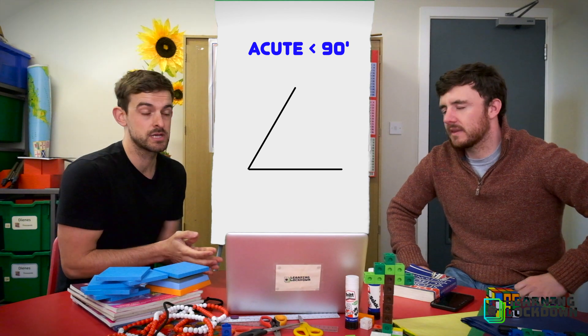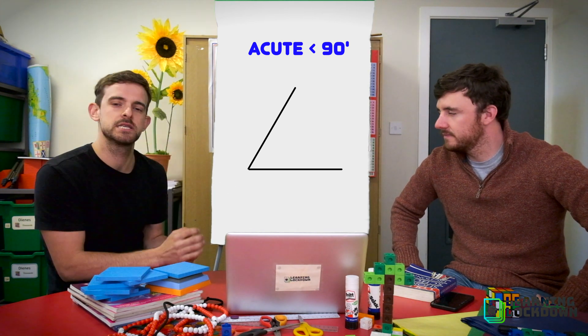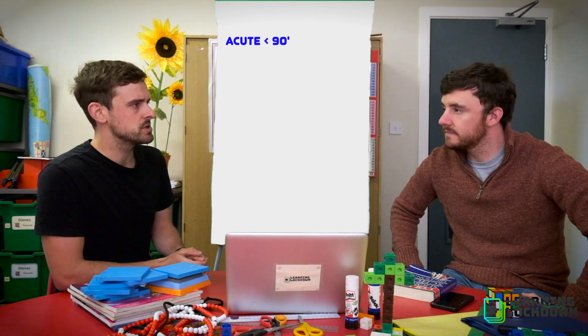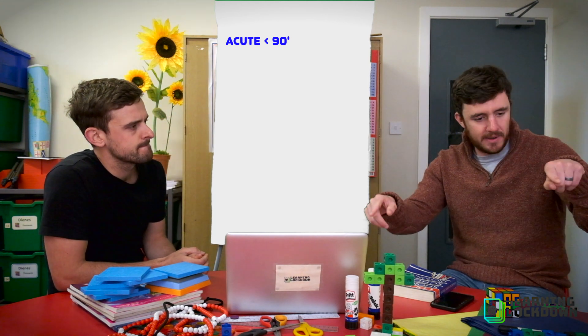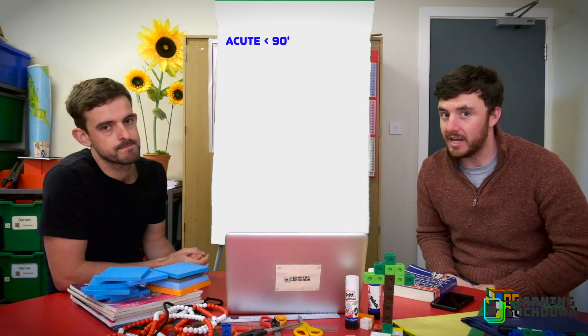So those are acute angles and they're easy to recognize because they're smaller than 90 degrees and you've just got to have that 90 degrees in your head. Well let's go over the other direction then. So any angle that is more than 90 degrees Mr S. Yes, so Mr A is telling you that a straight line, if you measure the distance from one point of a straight line to another point of a straight line, is 180 degrees.